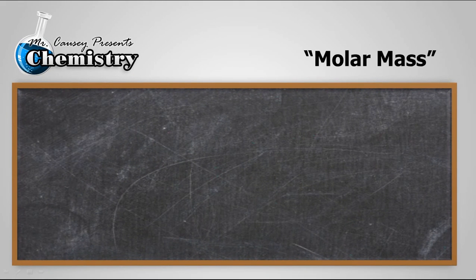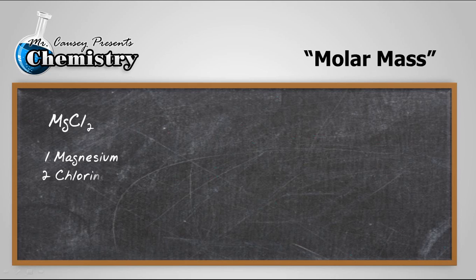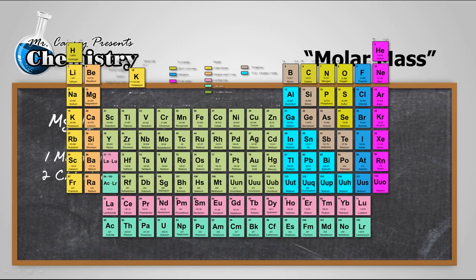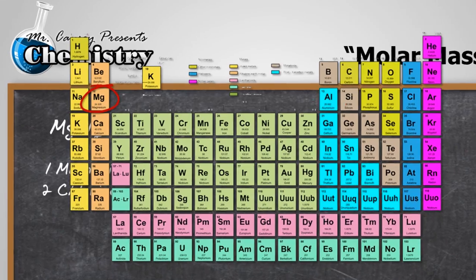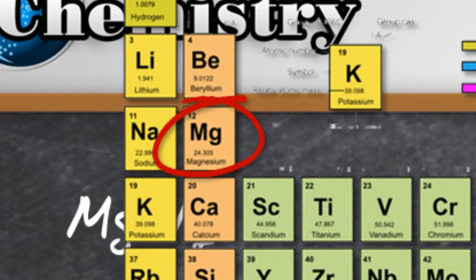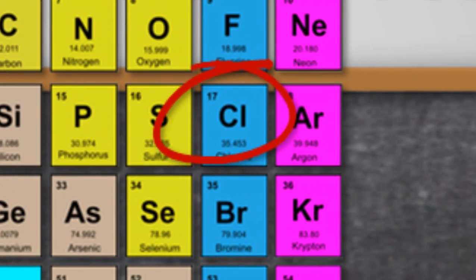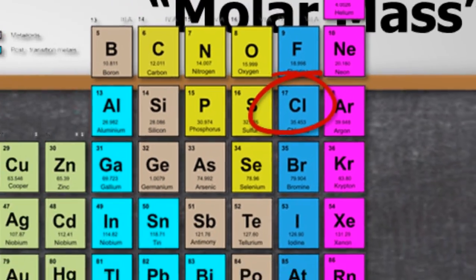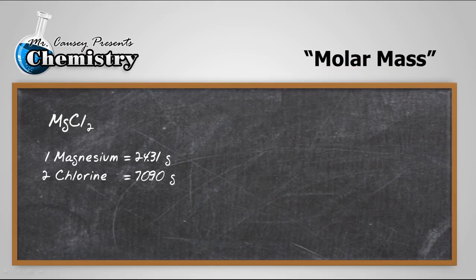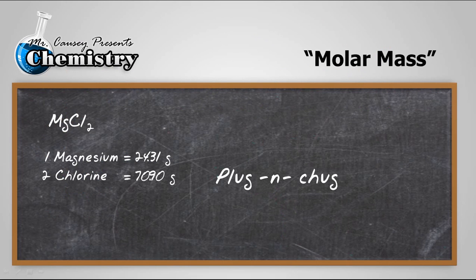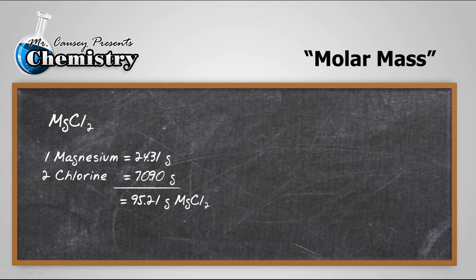First thing I want to do is find the molar mass of magnesium chloride. There is one magnesium and two chlorine. Go to my periodic table and voila, there's magnesium at 24.31 and there's chlorine at 35.45, and then let's plug and chug those and we're going to get 95.21 grams of magnesium chloride per mole. Awesome.